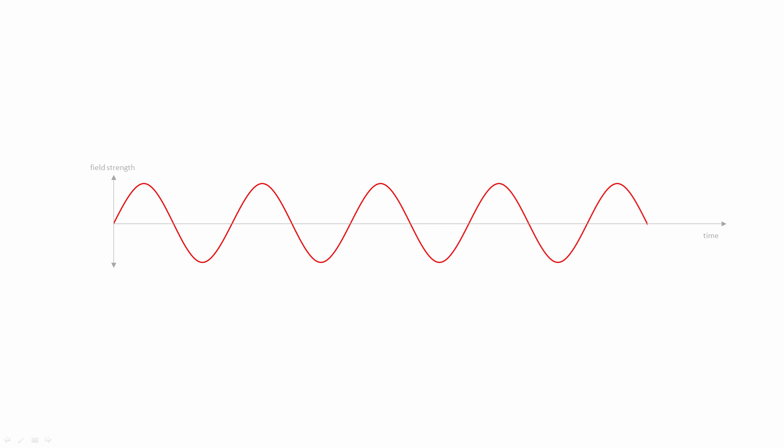The amplitude is an indication of the amount of power an electromagnetic wave contains. For a simple sine wave, the amplitude can be shown as the maximum height of the wave. We call this the peak amplitude. Amplitude can also be measured from peak to peak, like this.